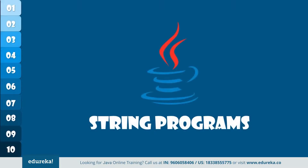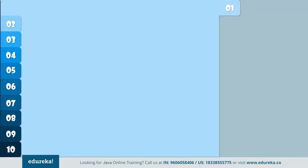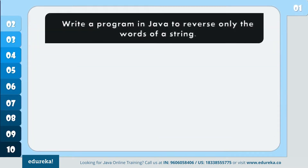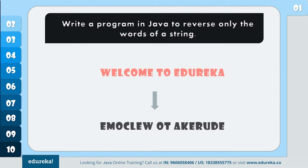Let's begin with some important programs on strings. The first problem statement goes like this: write a program in Java to reverse only the words of a string. Suppose you have a statement like 'welcome to Edureka' and you just have to reverse the words, but the sentence should remain the same. Let's see how to do this.